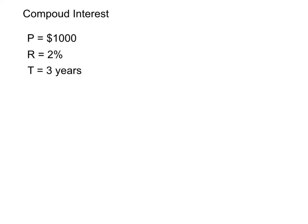Now we come to compound interest. Suppose we have P equals $1,000, R is 2%, and T is 3 years. Compound interest is quite different from simple interest. It means that after one year, we have some interest on $1,000, but this interest is added up to the principal after one year. So one year later, we have more than $1,000 as the principal. This interest adds up to the principal to make a bigger principal.